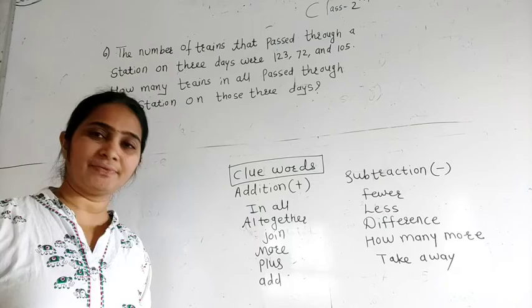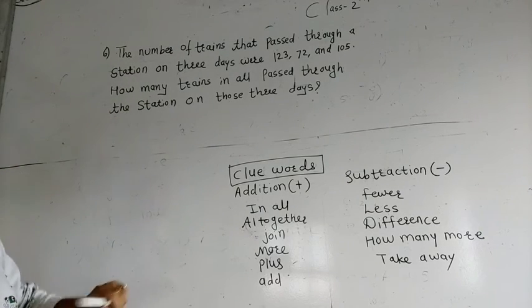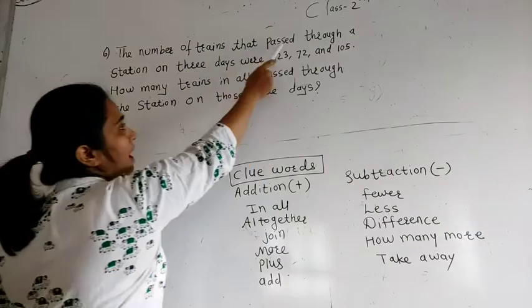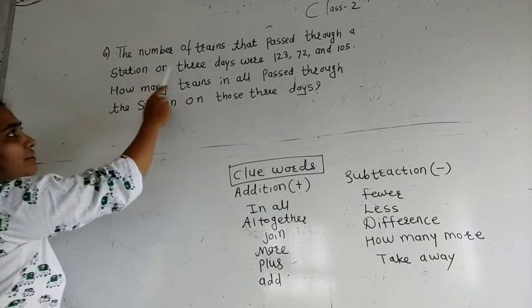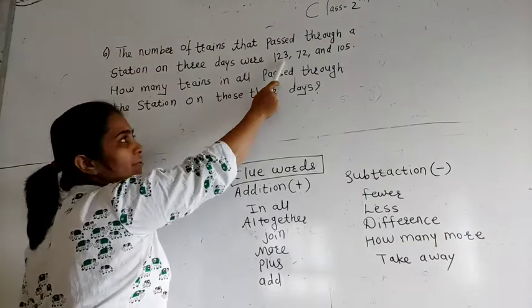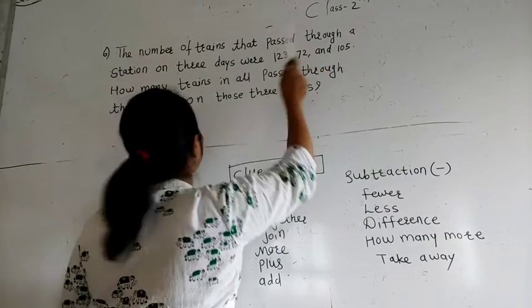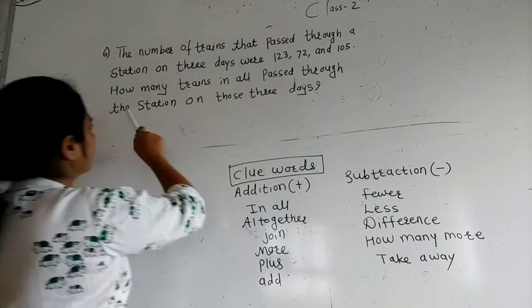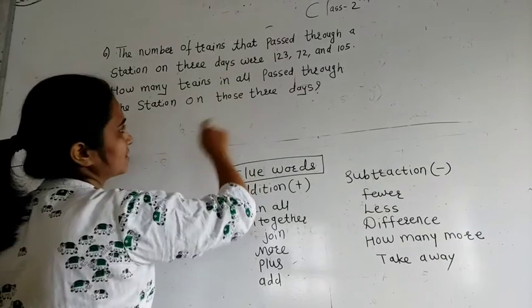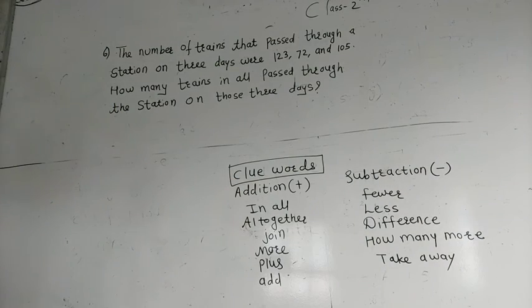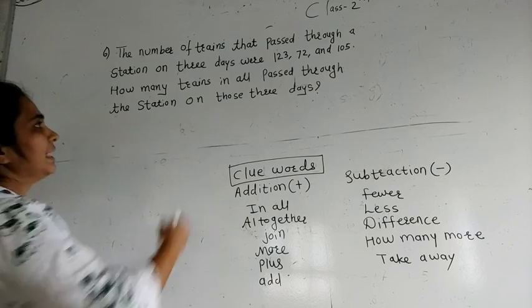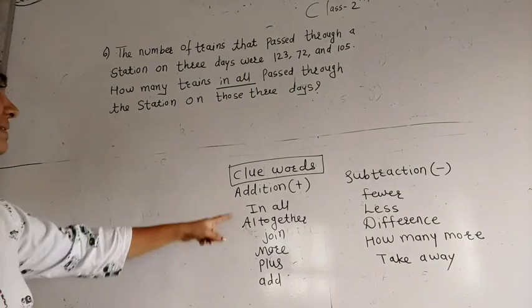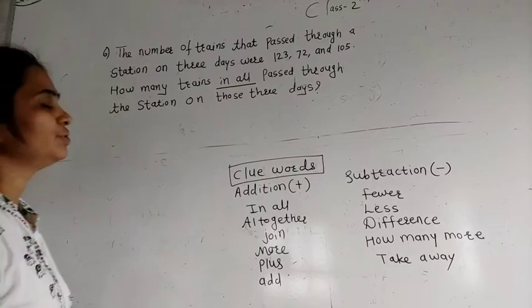Now we move to the next problem, that is problem number 6. The first step is reading. The number of trains that pass through a station on 3 days were 123, 72, and 105. How many trains in all passed through the station on those 3 days? First we find out the clue words. The clue word is 'in all', which is in the addition column, so we have to do addition.